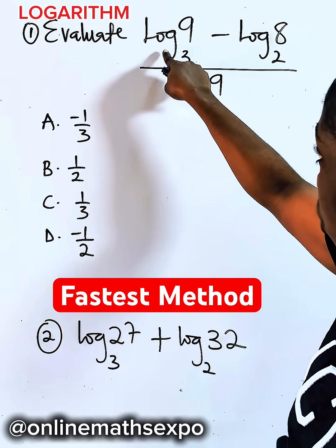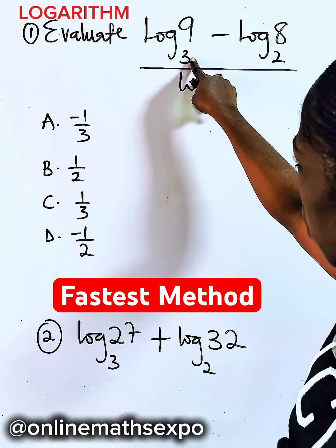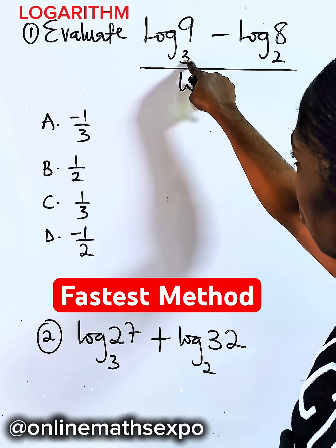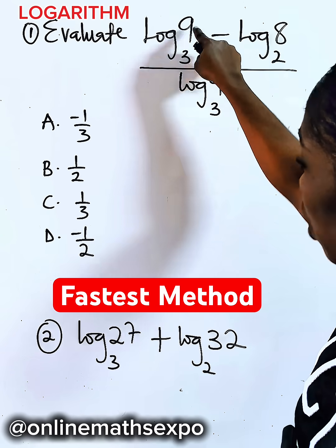What does this mean? You are told log of 9 base 3. This 3 shows you how many times you can multiply 3 to give you 9.